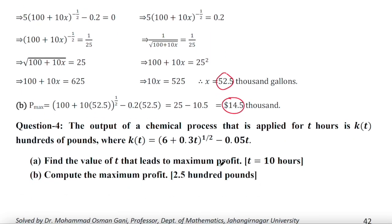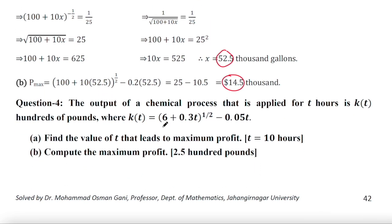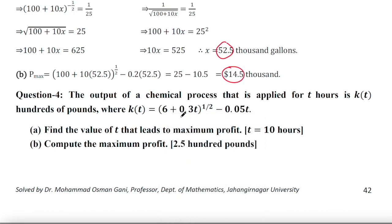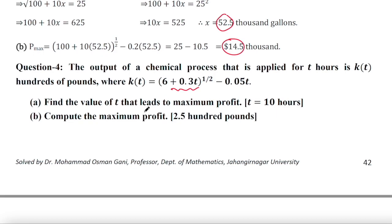The last problem is exactly the same. This is also a profit function and the derivative procedure is exactly the same — you can solve it by yourself. Here the t value will be 10. If you put t = 10 into the second derivative, it will be negative, so there is a maximum point at t = 10, and the maximum profit is obtained by substituting 10 into the function.